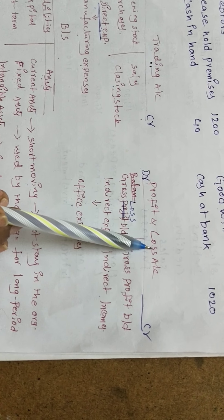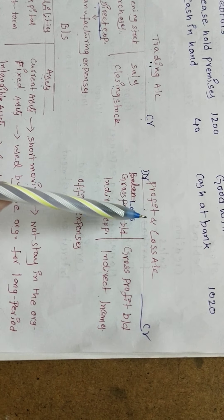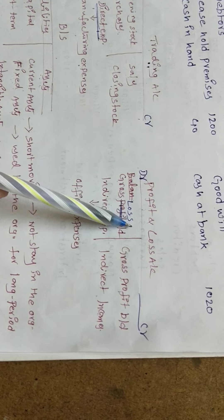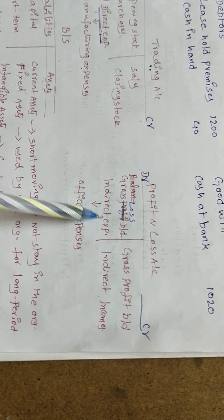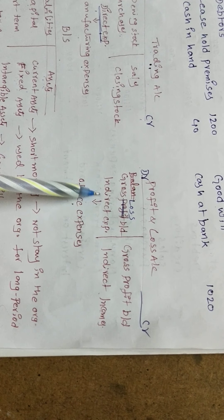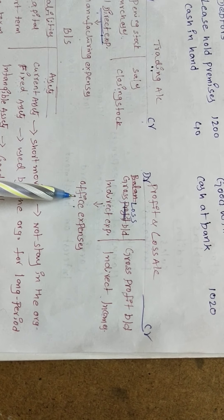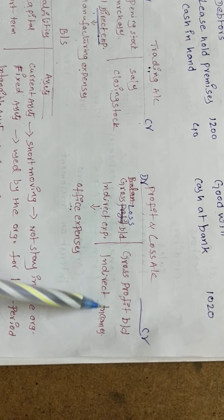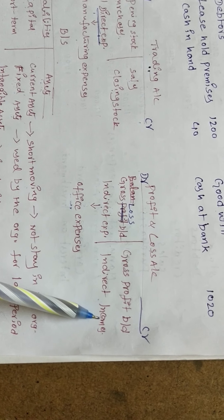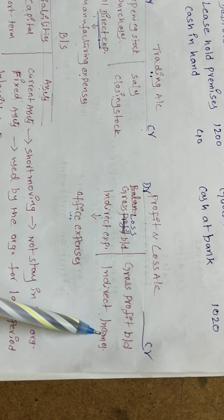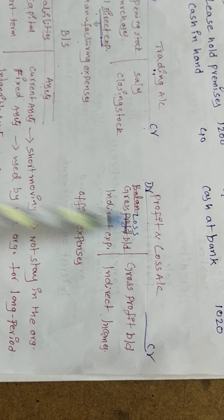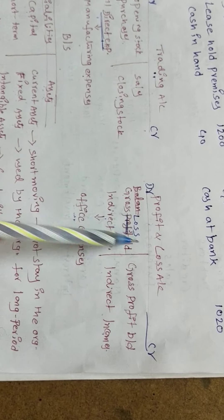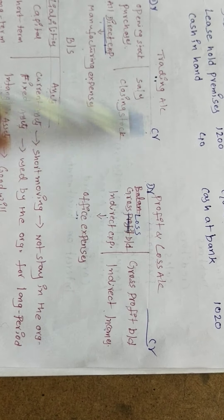The second component is the profit and loss account. According to its format, on the debit side we record all indirect expenses — indirect expenses means office expenses. On the credit side we record indirect incomes, and we also record gross profit and gross loss taken from the trading account.